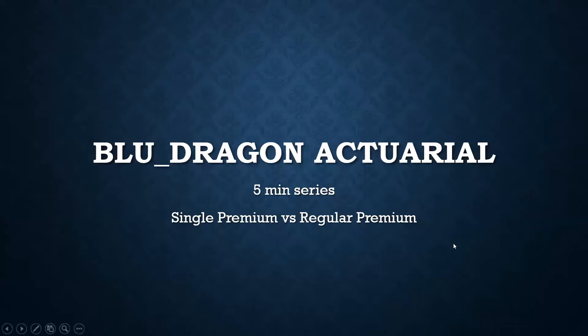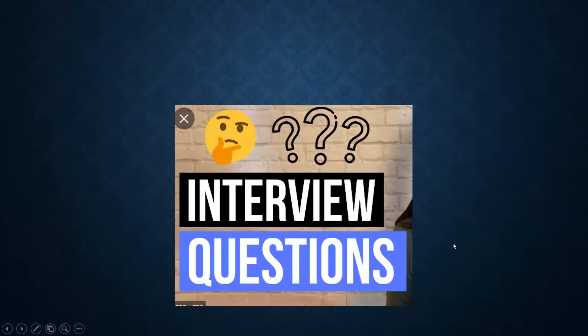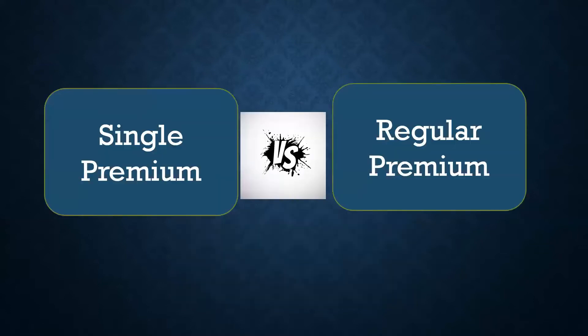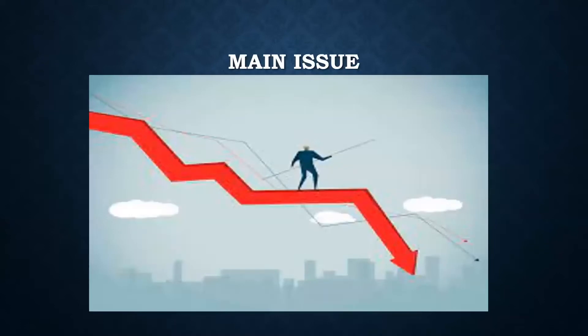The main difference relates to investment risk. In a regular premium policy, your premium comes in every quarter — say 100 rupees per quarter. You take that 100 rupees, invest it in the first quarter, then take another 100 rupees and invest it based on the investment conditions prevalent in that quarter, and again in the third quarter, and so on.